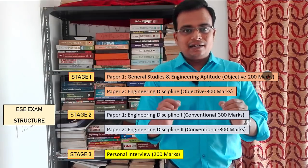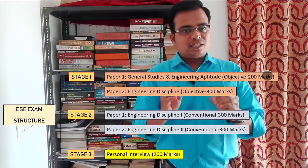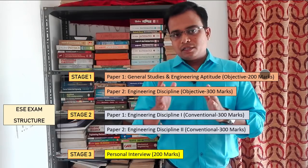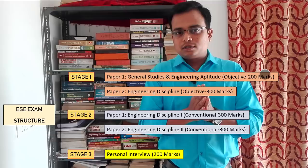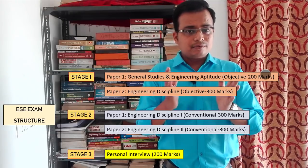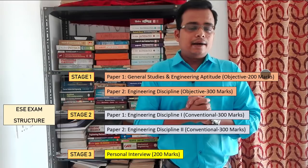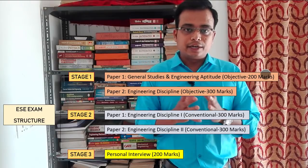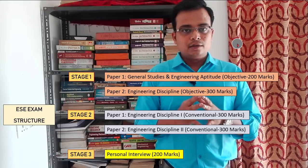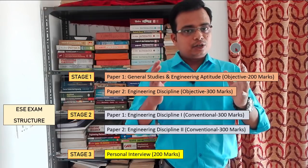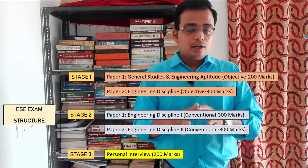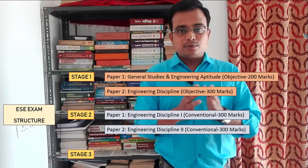Paper 1 is 200 marks and is common for all branches. I'll be focusing specifically on engineering drawing. Looking at past papers — in 2017 there were almost eight problems purely from engineering drawing, and they were quite good. We need to keep watching these videos regularly and solve all the problems simultaneously. Leave engineering drawing to me and I'll show you how to solve the objective problems based on it.